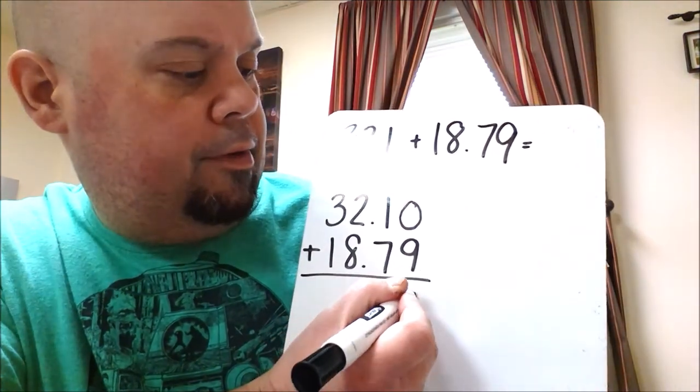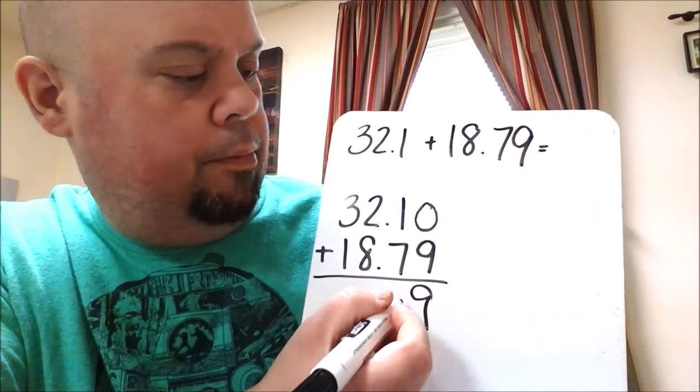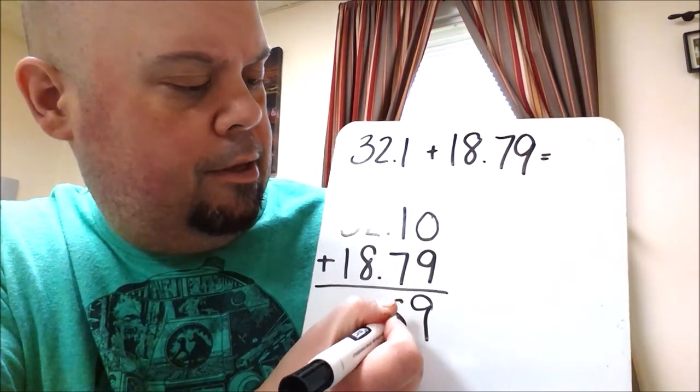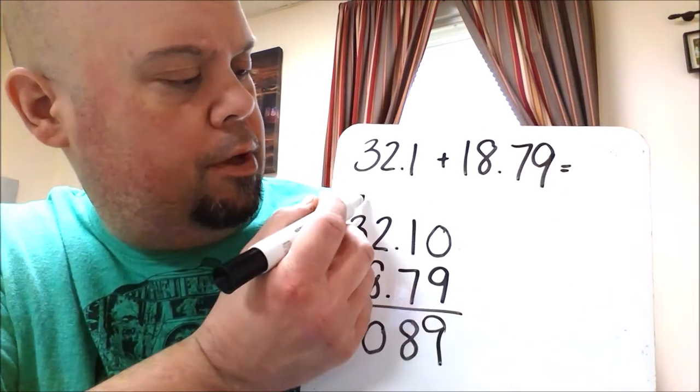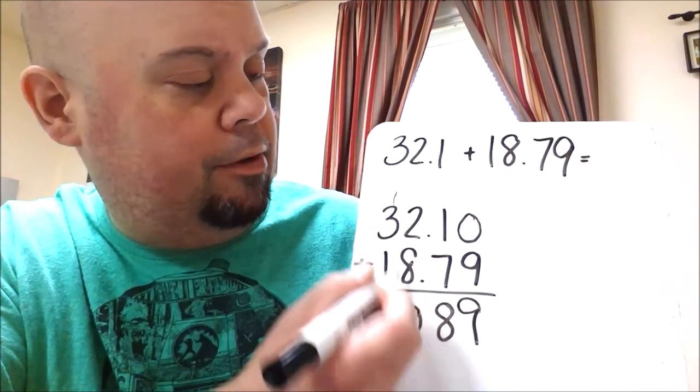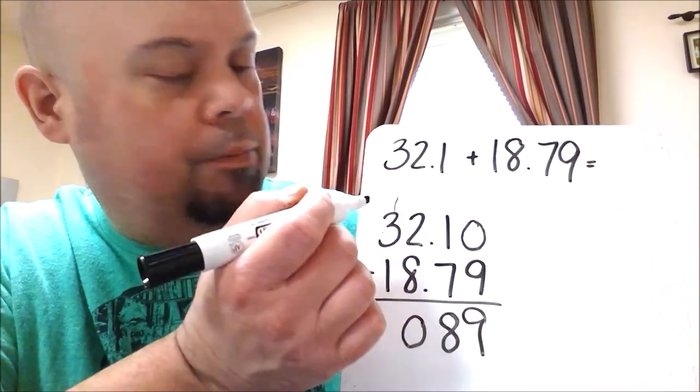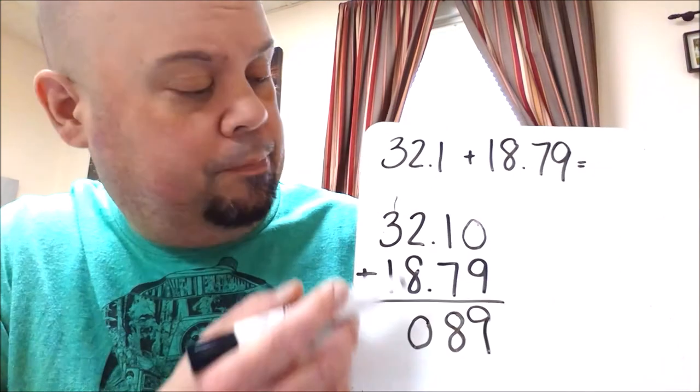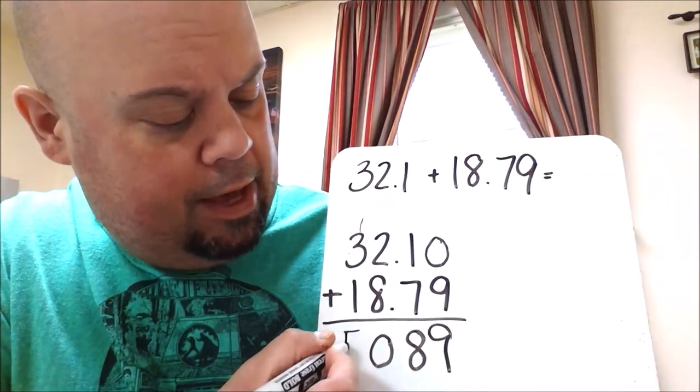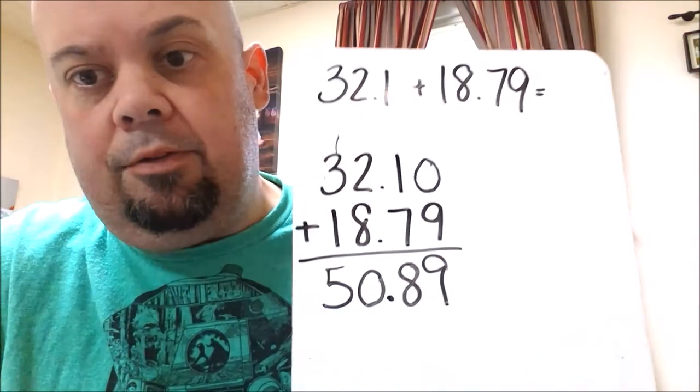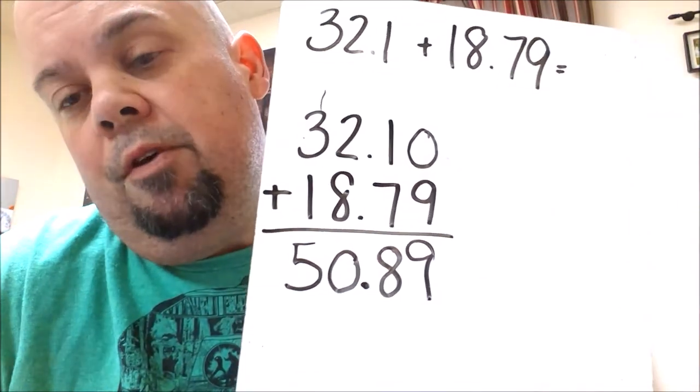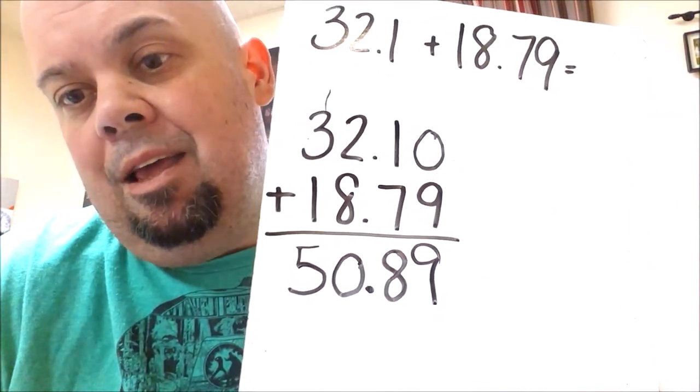0 plus 9 is 9. 1 plus 7 is 8. 2 plus 8 is 10. Put down my 0. Regroup my 1. 1 plus 3 is 4. 4 plus 1 is 5. And then our decimal stays in line with the others. So our answer would be 50 and 89 hundredths.